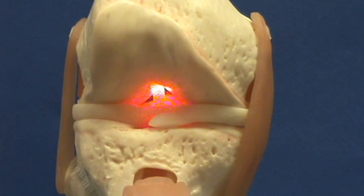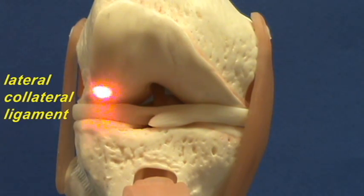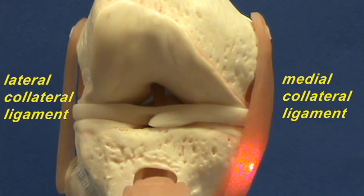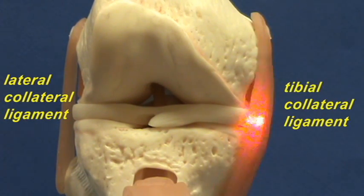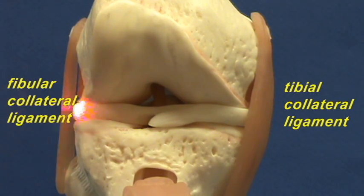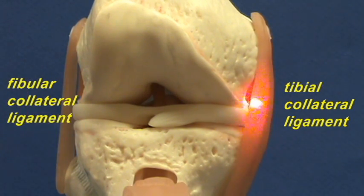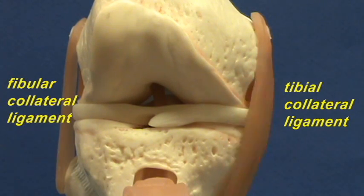This is the anterior cruciate ligament. Here again is the lateral collateral ligament and here is the medial collateral ligament. This is also referred to as the tibial collateral ligament, and this would be referred to as the fibular collateral ligament. So you can either refer to them as the fibular collateral ligament or the lateral collateral ligament, or as the tibial collateral ligament or the medial collateral ligament.